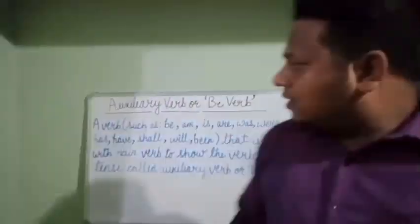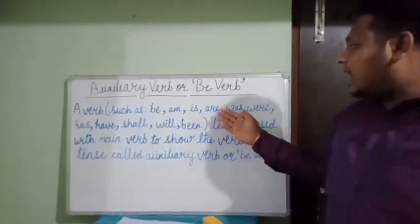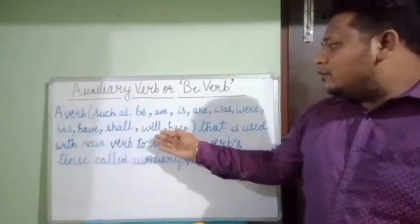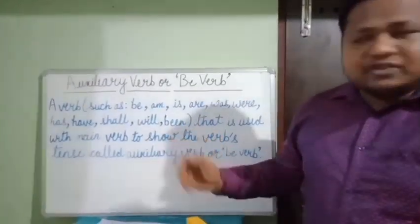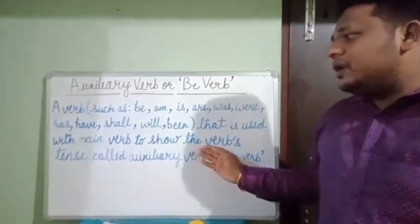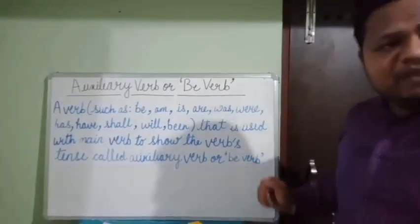To understand subject-verb agreement in a much better way, we must have knowledge about auxiliary verbs, or be verbs. Auxiliary verbs are verbs such as be, am, is, are, was, were, has, have, shall, will, been, etc., that are used with a main verb to show the verb's tense. These are called auxiliary verbs or be verbs.